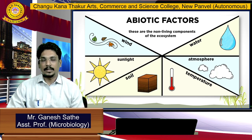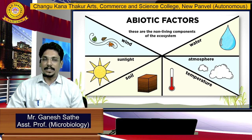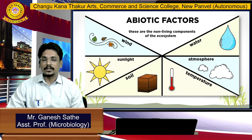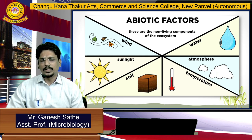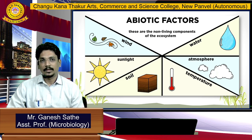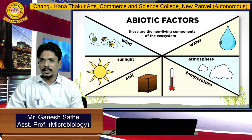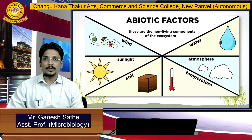The question arises: why are these factors called abiotic factors? Because these are the non-living components of the ecosystem. Without water, without air, will you survive? So water is very important, air is very important. In the case of atmosphere, there are different types of atmospheres.